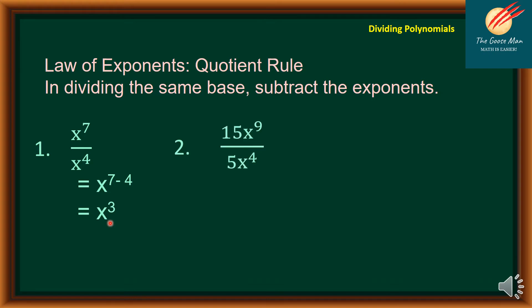Another example: if I have 15x to the 9th divided by 5x to the 4th power, I'll divide first the numbers 15 by 5, so I have 3. Then copy the same base of x and subtract the exponents 9 and 4. So I have 3x to the 5th power.